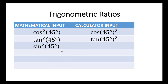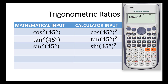Now let's move to sine squared 45 degrees. The same way, you key in sin 45 degrees, close the parenthesis, and introduce the exponent 2. Press sin 45, close bracket, introduce the exponent 2, and press equal to. The answer is one half.